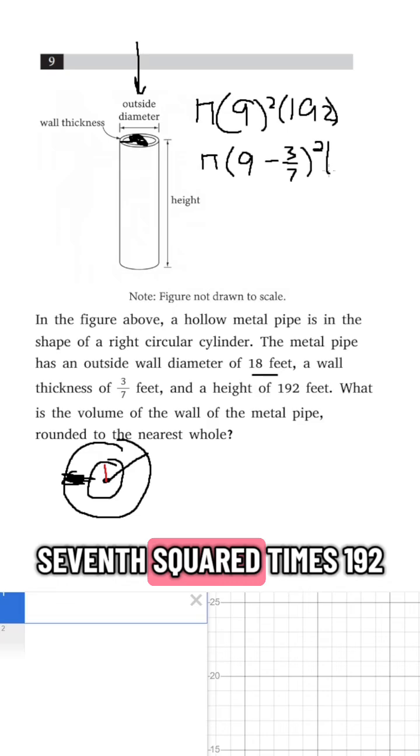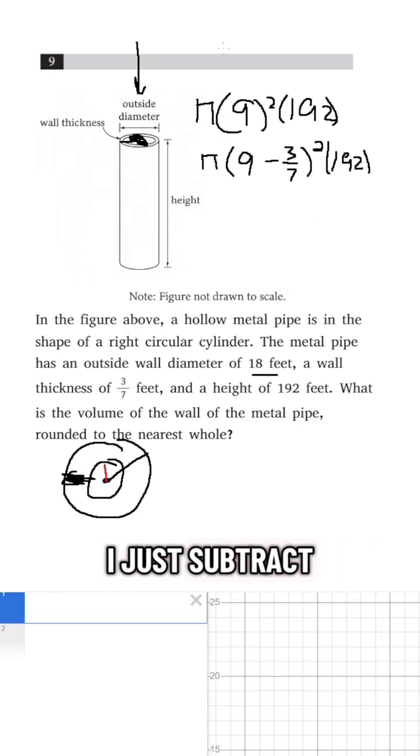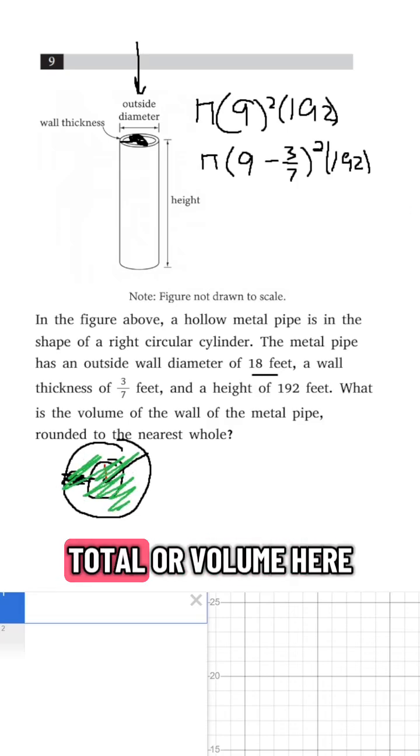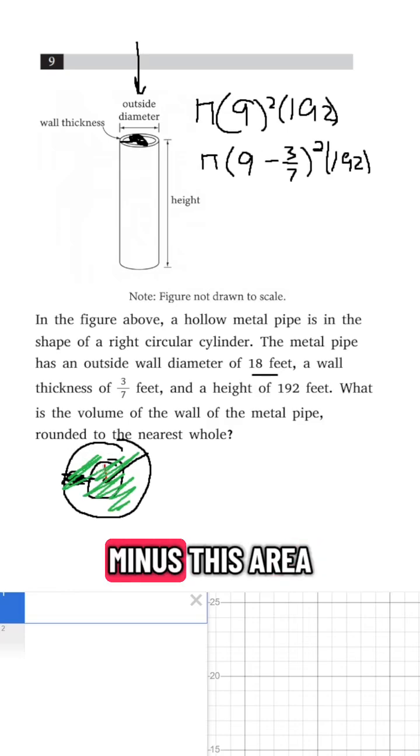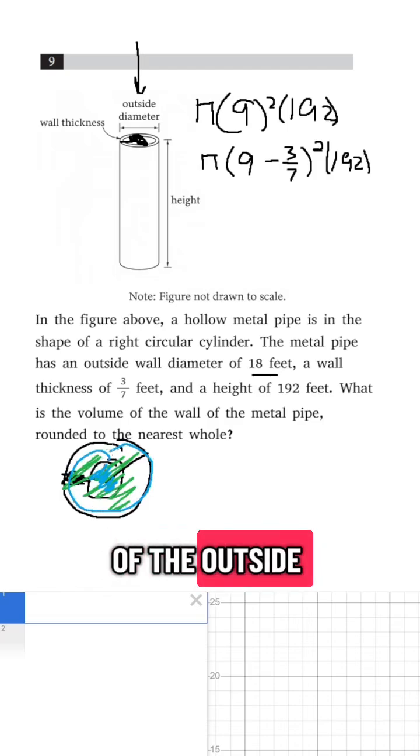So times 3/7 squared times 192, and then if I just subtract these two, that's basically saying what is the area of this total or volume here minus this area or volume, and that's going to leave me with my volume of the outside.